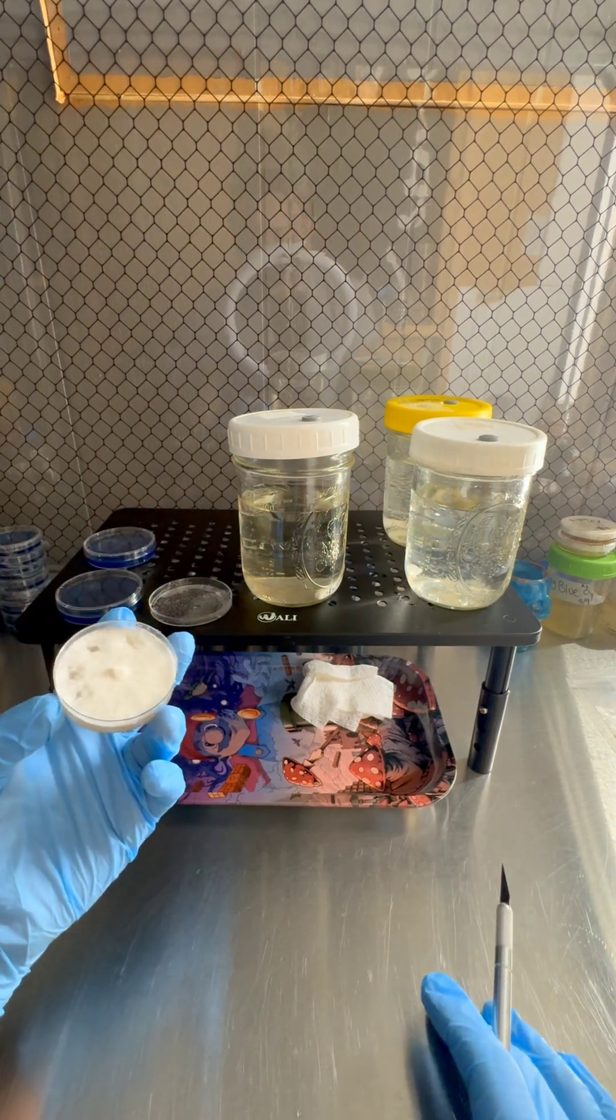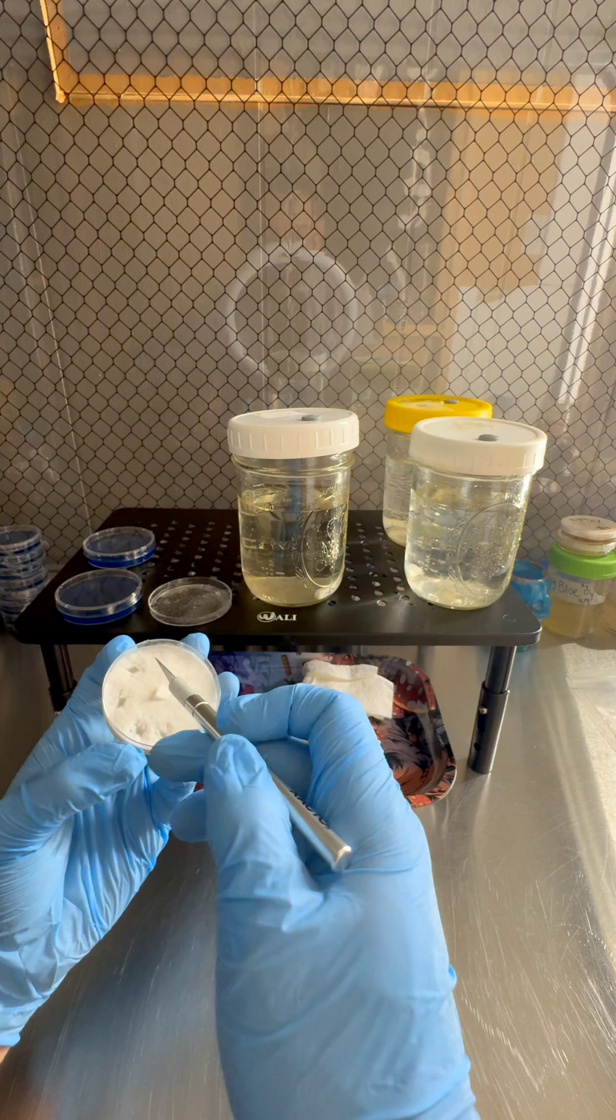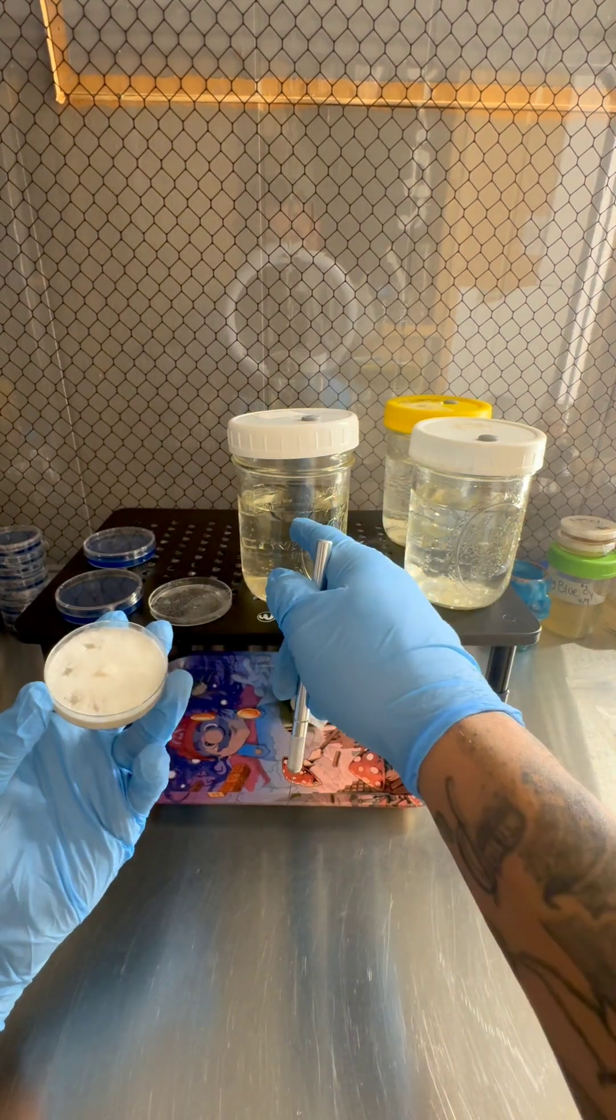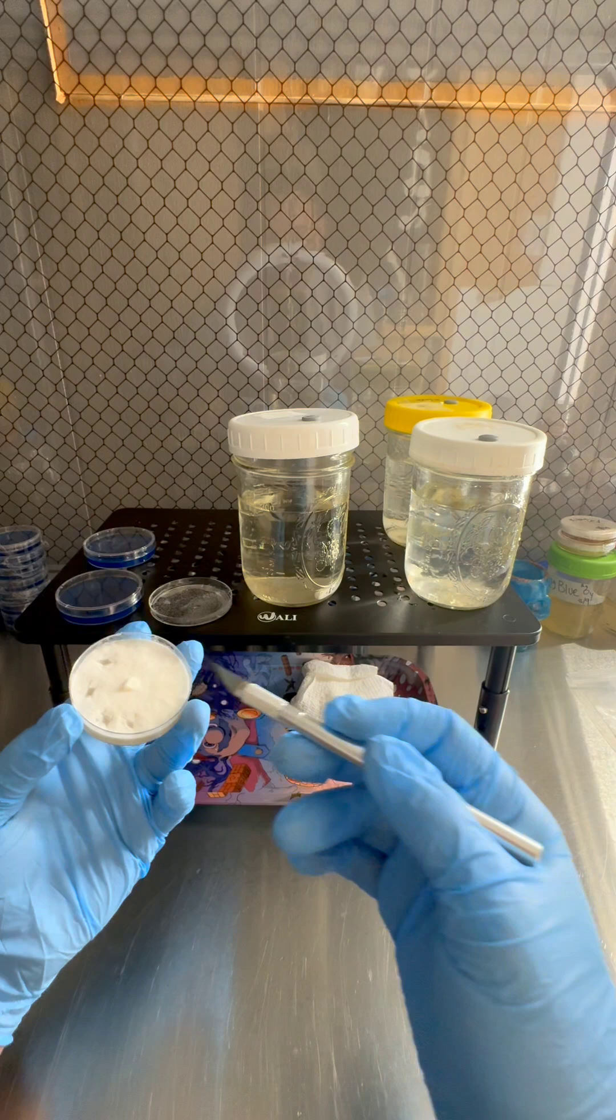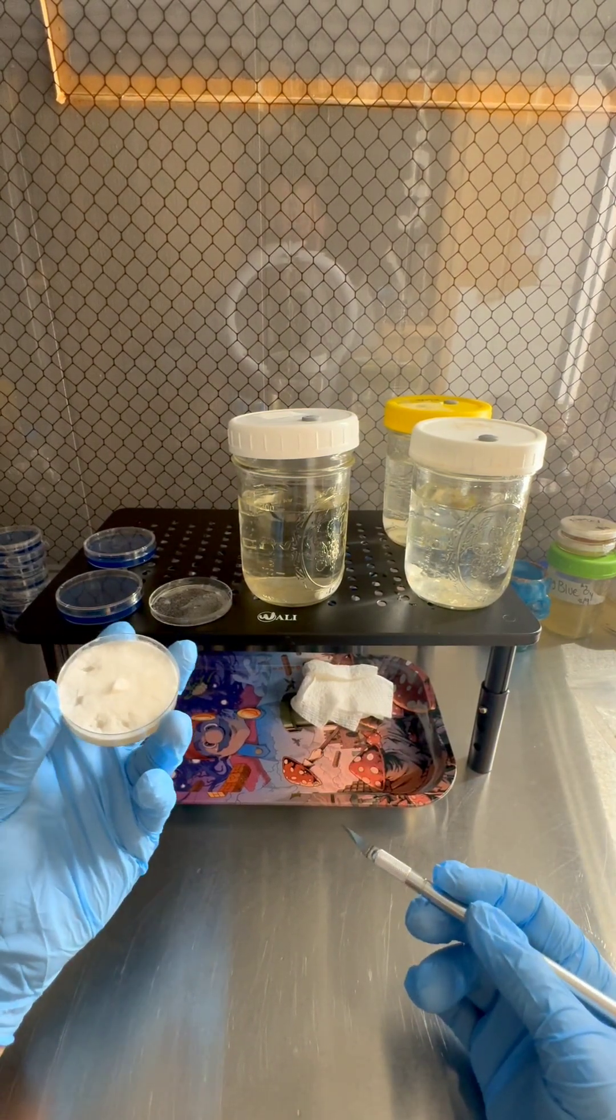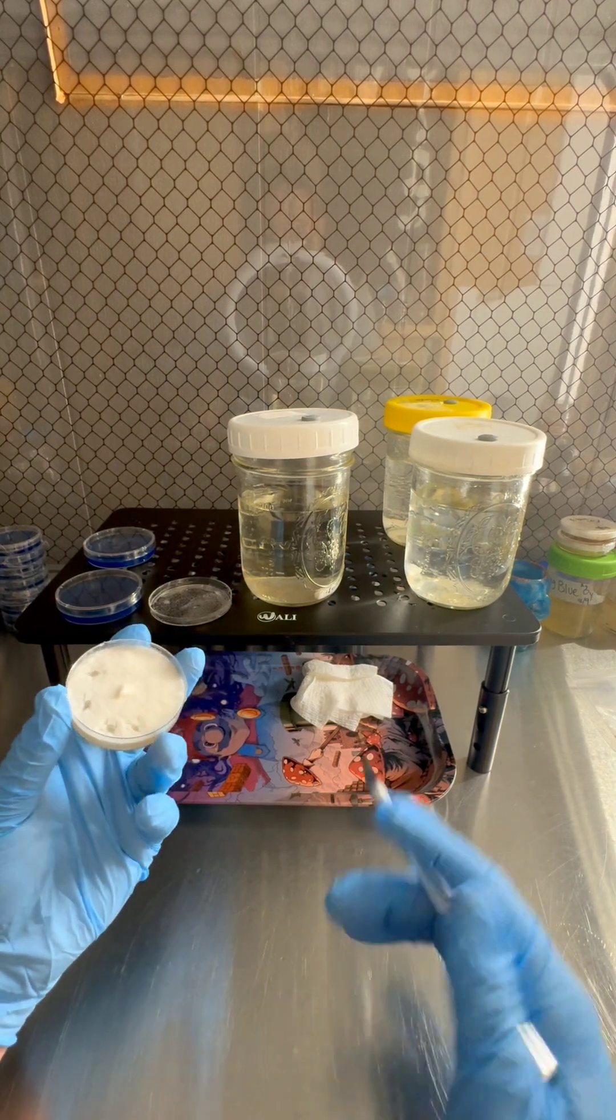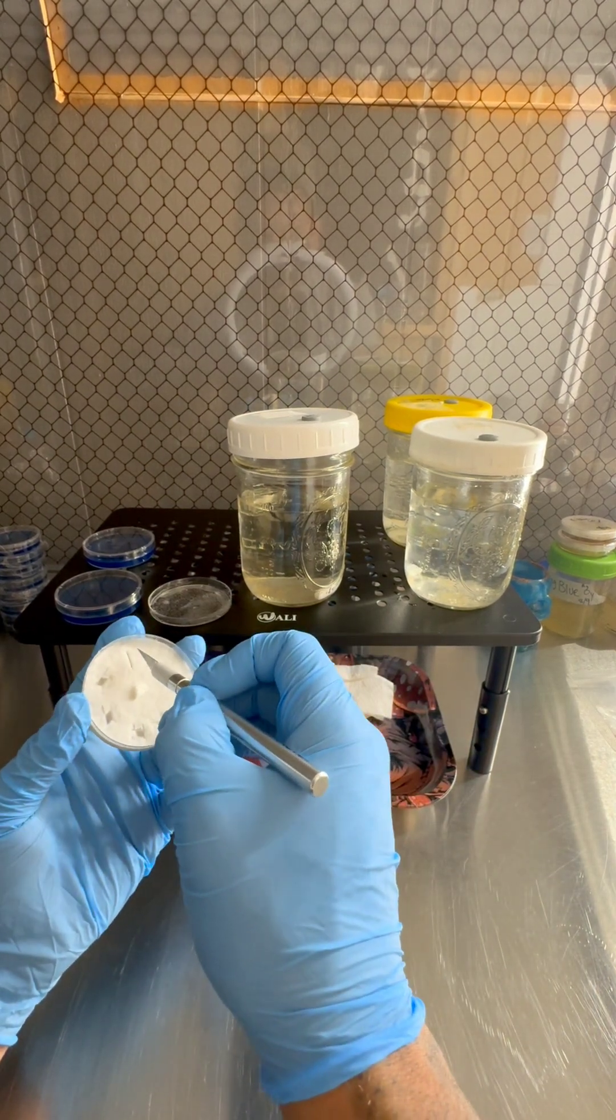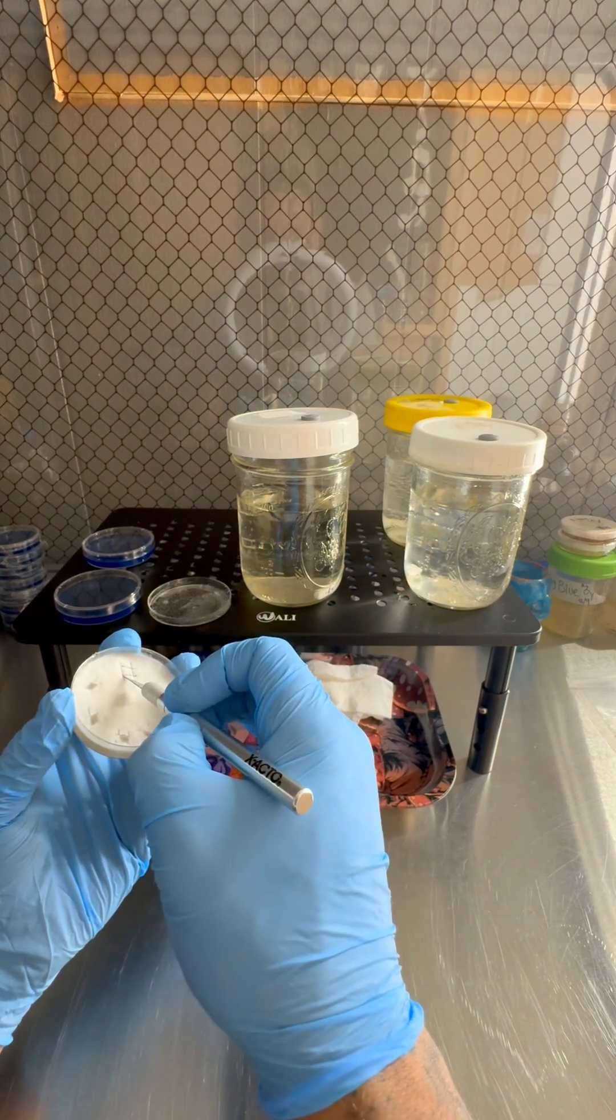So we got some mycelium on some agar right here. All we're gonna do is take a small piece and we're gonna transfer it into this jar. And that's gonna make some liquid culture just from this. So this is another way to inoculate your agar. You want to make sure you do this under a flow hood or in a still air box. Make sure this environment is very sterile. All you need is a little square. You can make it a triangle. Whatever shape you like. I like squares.